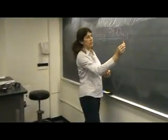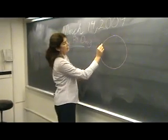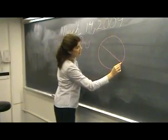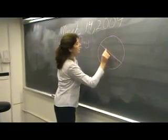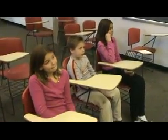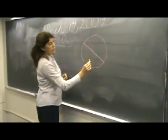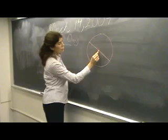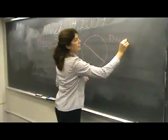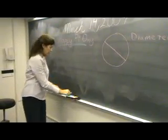So the first thing we're going to do is look at a circle. If I draw a line from one side of the circle, through the middle, and to the other side, does anyone remember from class yesterday what this line is called? Sophie? The diameter. So this is called the diameter — any line you draw in a circle that starts on one side, goes through the middle, and out the other side.